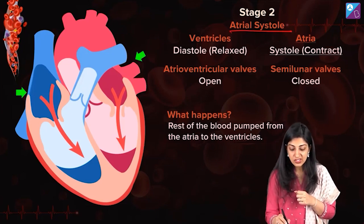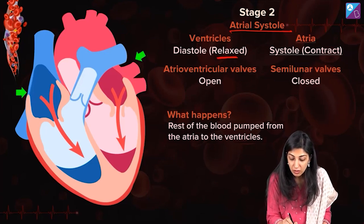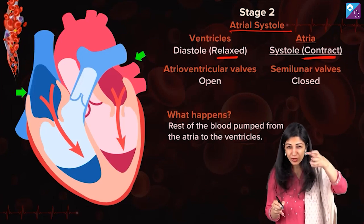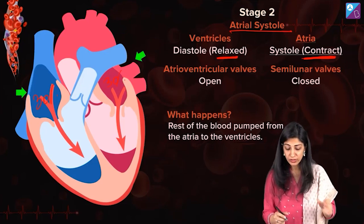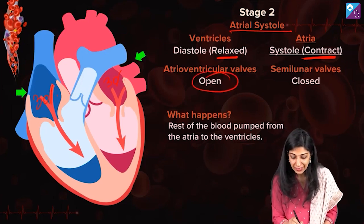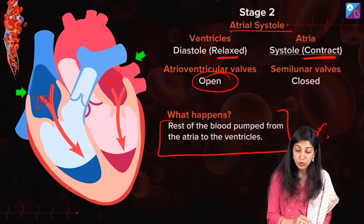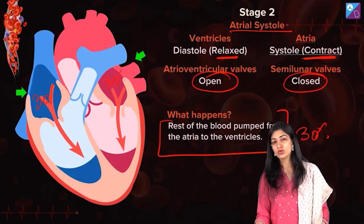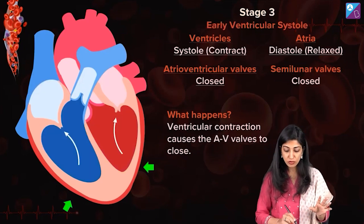Stage 2: Atrial systole. Systole is contraction. Please notice this is not joint — first, the atria will contract. Ventricles are still in diastole or relaxed in atrial systole, but the atria contract. When they contract — like a balloon — 30% of the blood was still remaining. This contraction is going to put pressure, and the AV valves are open from the previous stage, so the rest of the blood, the 30% also goes down to the ventricles. Now the ventricles are completely filled with blood. The semilunar valves are still closed — please remember, in atrial systole, semilunar valves are still closed. There is no pressure on them.